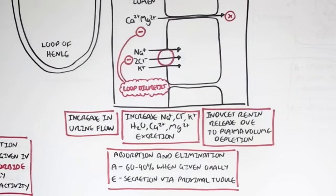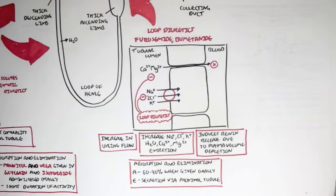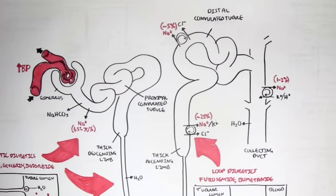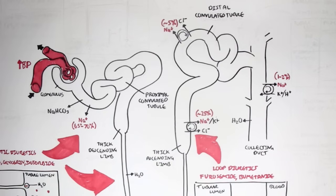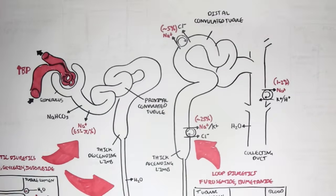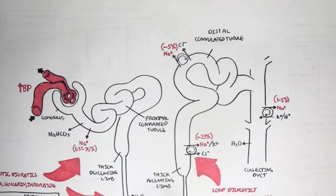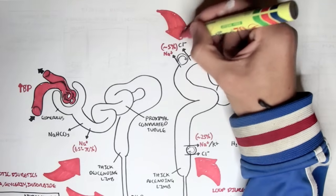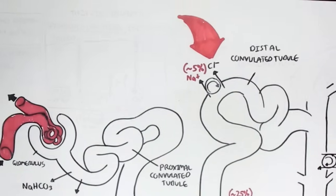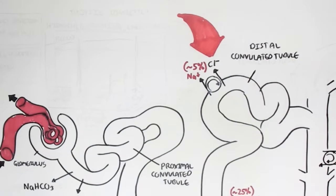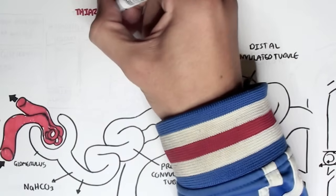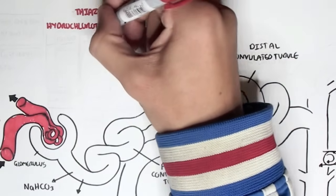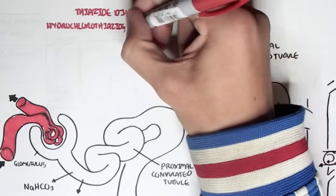The third type is thiazide diuretics, which work on the distal convoluted tubules — particularly the sodium-chloride cotransporter there. Thiazide diuretics include hydrochlorothiazide and chlorothiazide, easily remembered because they all end in '-thiazide'.